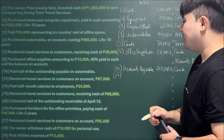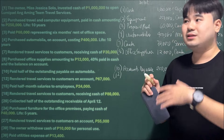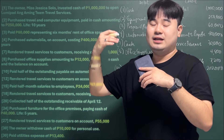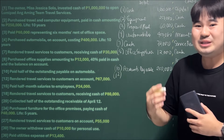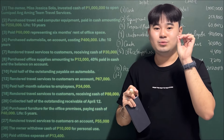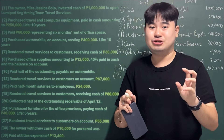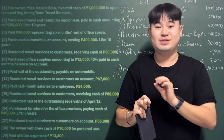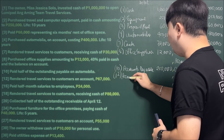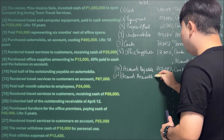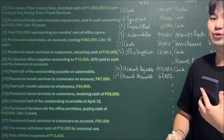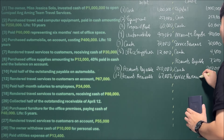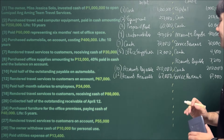April 12: Rendered travel services to customers on account — for example, a trip to Thailand — for 67,000. The service has been rendered but the customer hasn't paid yet, so we set up Accounts Receivable (representing an expectation to receive something in the future). We debit Accounts Receivable for 67,000 and credit Service Revenue for 67,000 since the earning event already happened.